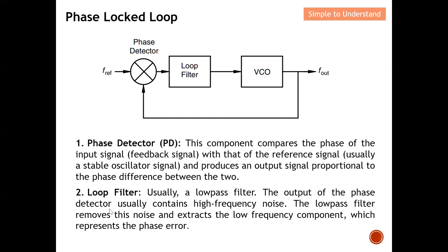The loop filter is typically a low-pass filter. The output of the phase detector usually contains high-frequency noise — imagine it like a mixer where mixing two signals creates harmonics. Because of this, we need to filter away all the high-frequency noise, which is done by the low-pass filter. The low-pass filter removes this noise and extracts the low-frequency component, which represents the phase error.